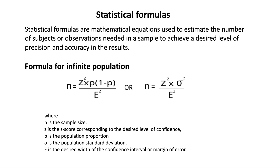Formula for infinite population: n = z² × p × (1 − p) / e². Here, n is the sample size, z is the z-score corresponding to the desired level of confidence, p is the population proportion, sigma is the population standard deviation, and e is the desired width of the confidence interval or margin of error.